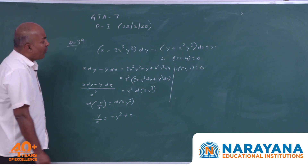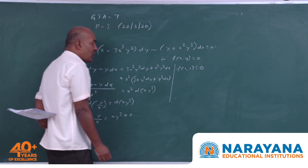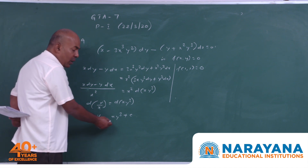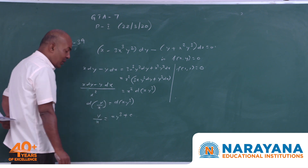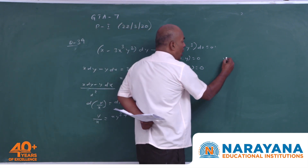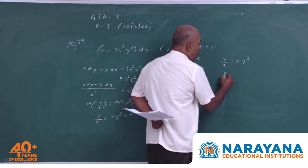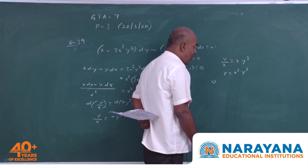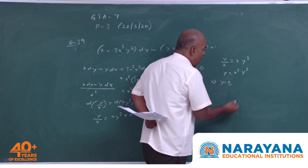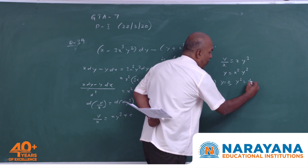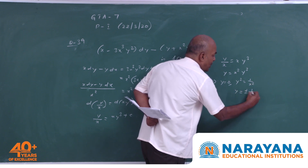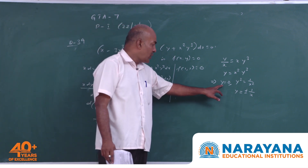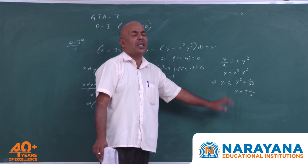Integrating both sides: y/x = xy³ + C. Using the condition f(1,1) = 0: 1 = 1 + C, so C = 0. The solution is y/x = xy³, or equivalently y = x²y³. This gives either y = 0, or y² = 1/x², so y = ±1/x. There are three functions satisfying the given condition: y = 0, y = 1/x, and y = −1/x.